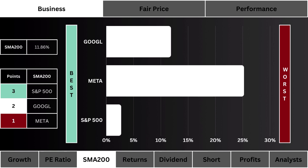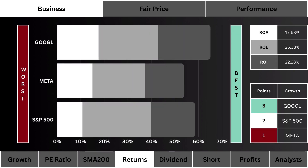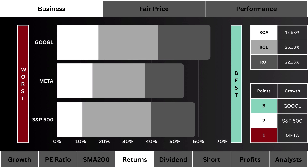Let's look at the 200-day simple moving average — which stock is trading lower than its SMA 200 the most? More points are given to the lower SMA 200 stock. Next, let's look at returns — which stock is using its combined assets, cash, and investments most efficiently? More points are awarded to the more efficient stock.